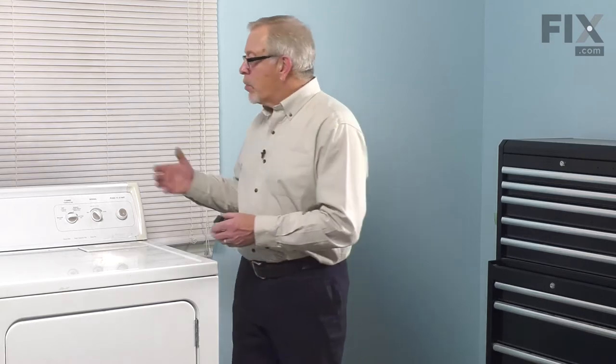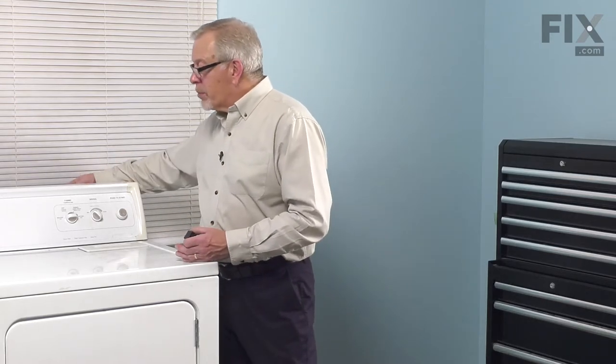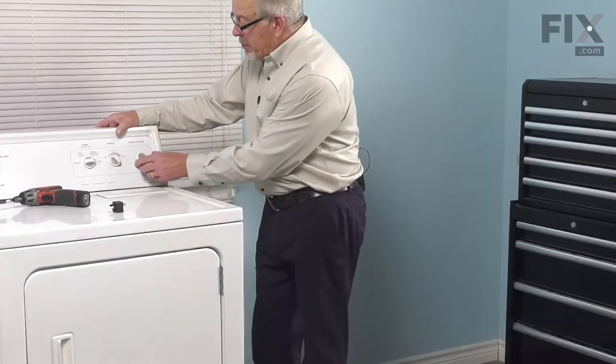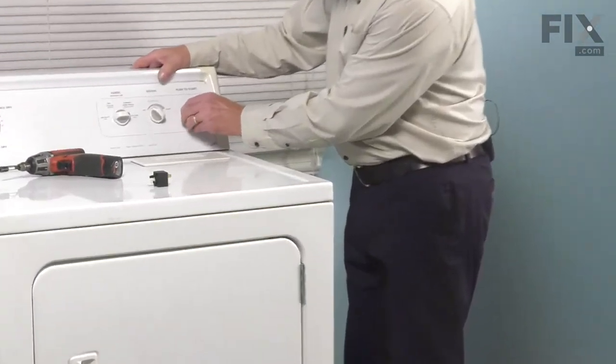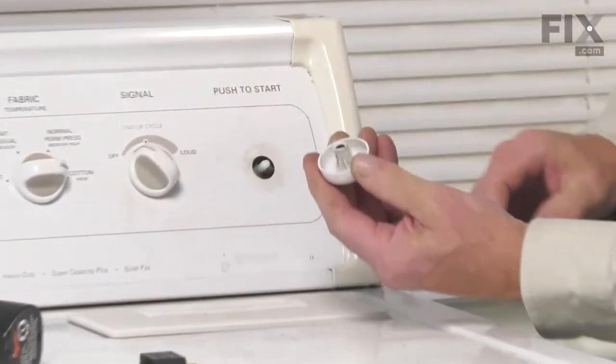Once we've done that, we will need to pull it far enough forward that we can remove the back panel, and then we can change out the switch. We'll begin by pulling the knob off of the old push to start switch, simply pull it off.